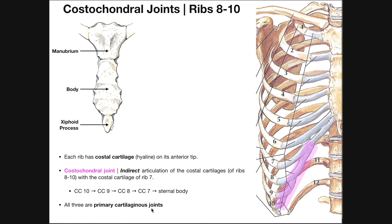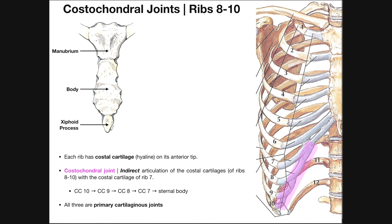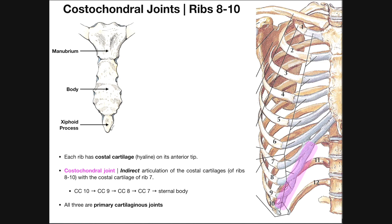All three of these costochondral joints — ribs eight, nine, and ten — are considered primary cartilaginous joints, just like rib number one. They are not synovial joints; they are amphiarthroses, primary cartilaginous joints.